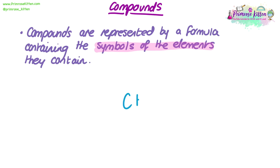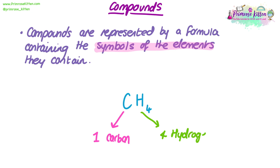Looking at CH4 as an example, the C by itself tells us there is one carbon, and the H with a small 4 next to it tells us there are four hydrogens. So in this compound there is one carbon and four hydrogens — that compound is methane. In order to write the formula for a compound, we need to know which elements are contained within it and how many atoms of each element there are.